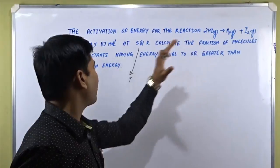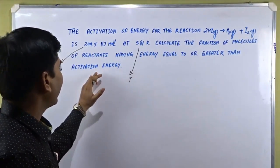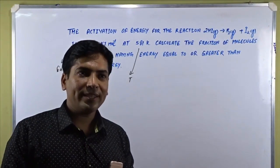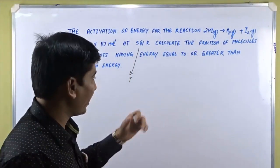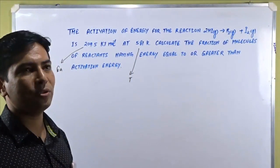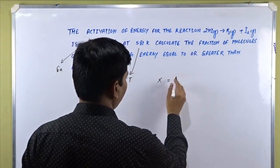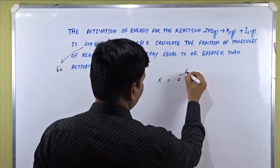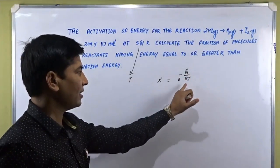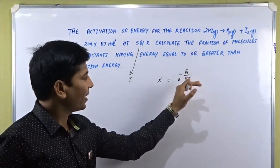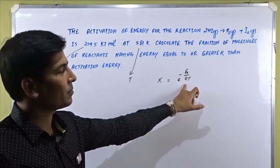The question asks us to calculate the fraction of molecules of reactants having energy equal to or greater than the activation energy. We assume that the fraction of molecules of reactants is x. The formula becomes: x = e to the power of minus Ea upon RT, where Ea is activation energy, R is the gas constant, and T is temperature.